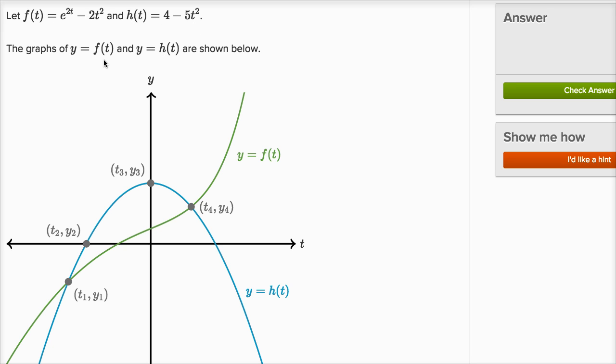The graphs of y equals f of t and y equals h of t are shown below. So y equals f of t is here in green, so this is really y is equal to e to the 2t minus 2t squared. We see f of t right over there.